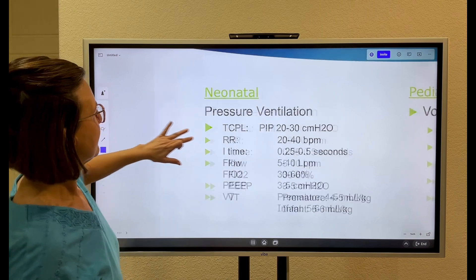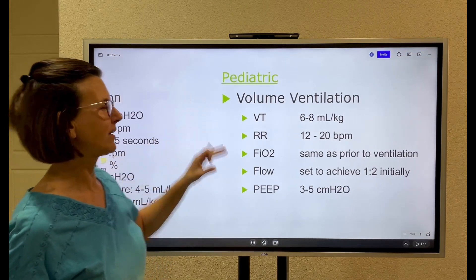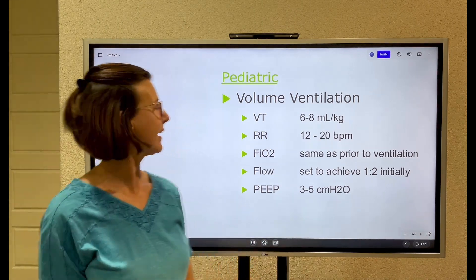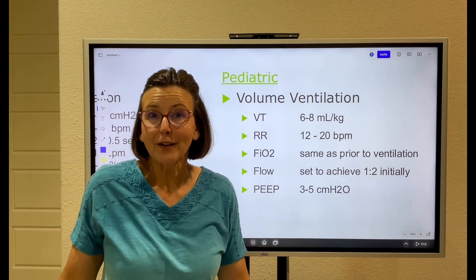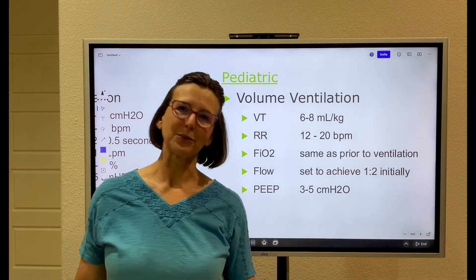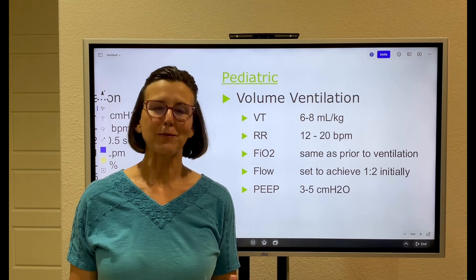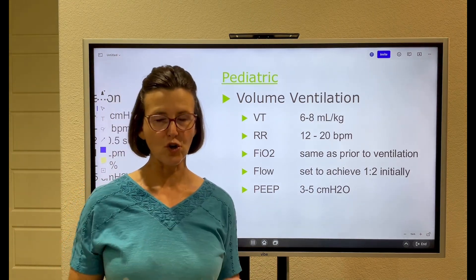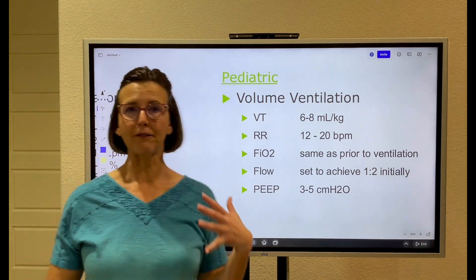Now for pediatrics: we typically use volume ventilation, and this is almost the same as for an adult. Tidal volume is 6 to 8 mL per kg — same as adults. Rate is 12 to 20 — same as adults. For FiO2, use the level the patient was already on; if we have no previous blood gas or history, start at 40 to 60 percent.